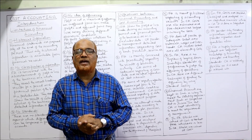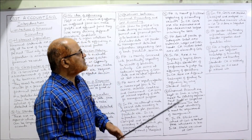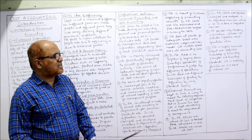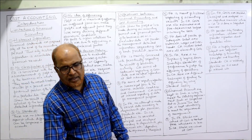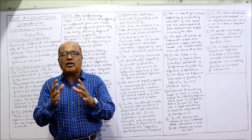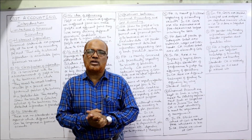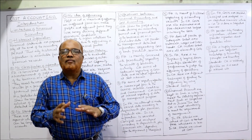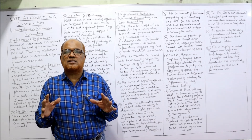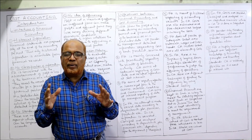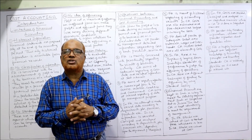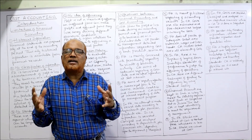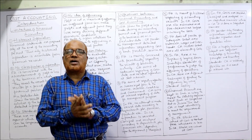Financial accounting does not provide for control of material, wages, or overhead rates — there is no technique for controlling cost in financial accounting. Whereas in cost accounting, different techniques are applied such as budgetary control, standard costing, and analysis of variance, all of which are used to control the cost of wages, material, and overheads.